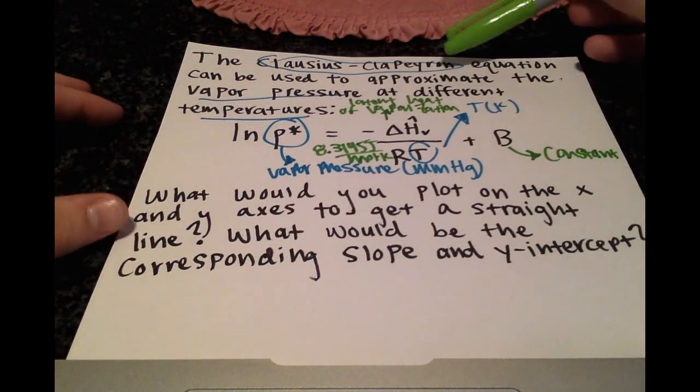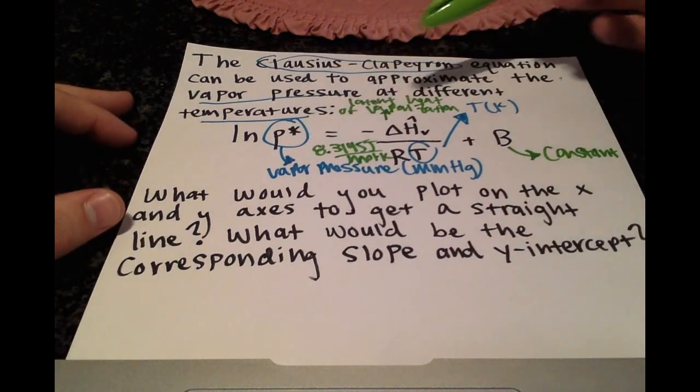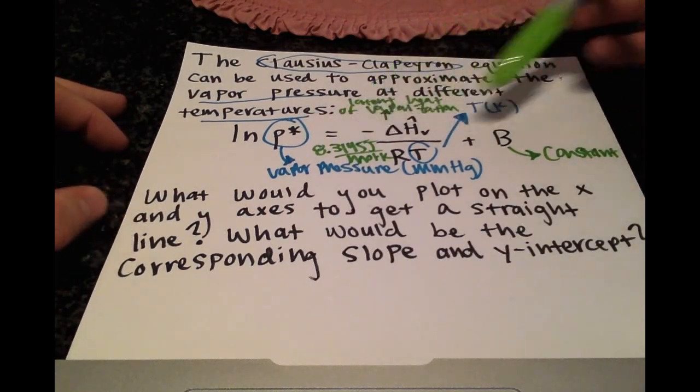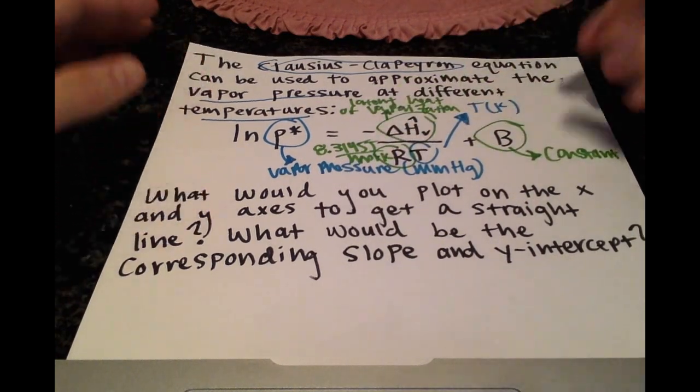So as you can see here, the Clausius-Clapeyron equation, you're changing the vapor pressure and the temperature, and everything else is going to be constant.